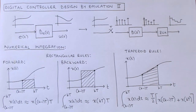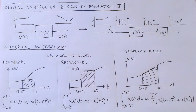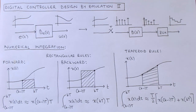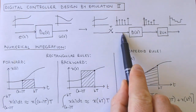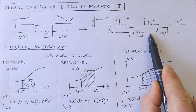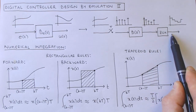The discretization methods for this video are based on numerical integration techniques. The basic idea is the following: we will convert the continuous transfer function to a differential equation and then approximate the differential equation with a difference equation using numerical integration. We will then convert the difference equation to a discrete transfer function. The difference equation takes the sampled input signal as input, and we assume that the output is held constant over a sampling period — in other words, the output is passed through a zero order hold circuit.